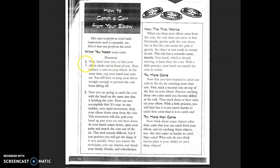Directions. One. First, bend your elbow so that your elbow sticks out in front of you. Next, balance a coin on your elbow. At the same time, cup your hand near your ear. You will have to keep your elbow straight enough to prevent the coin from falling off.